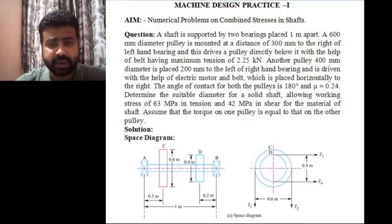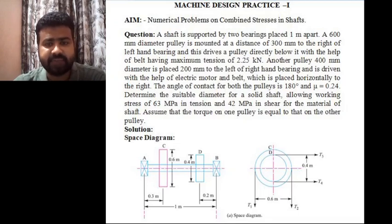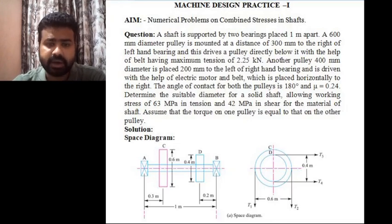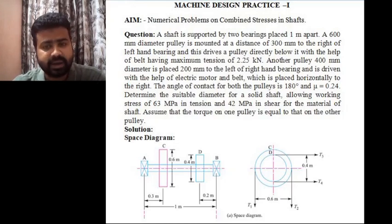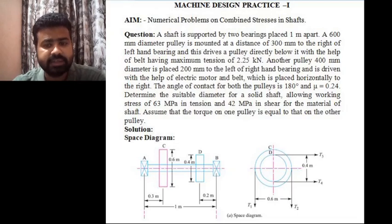A shaft is supported by two bearings placed 1 meter apart. A 600 mm diameter pulley is mounted at a distance of 300 mm to the right of the left hand bearing, and this drives a pulley directly below it with the help of a belt having maximum tension of 2.25 kN. Another pulley of 400 mm diameter is placed 200 mm to the left of the right hand bearing and is driven with the help of an electric motor and belt which is placed horizontally to the right. The angle of contact for both pulleys is 180 degrees and the coefficient of friction mu is 0.24.